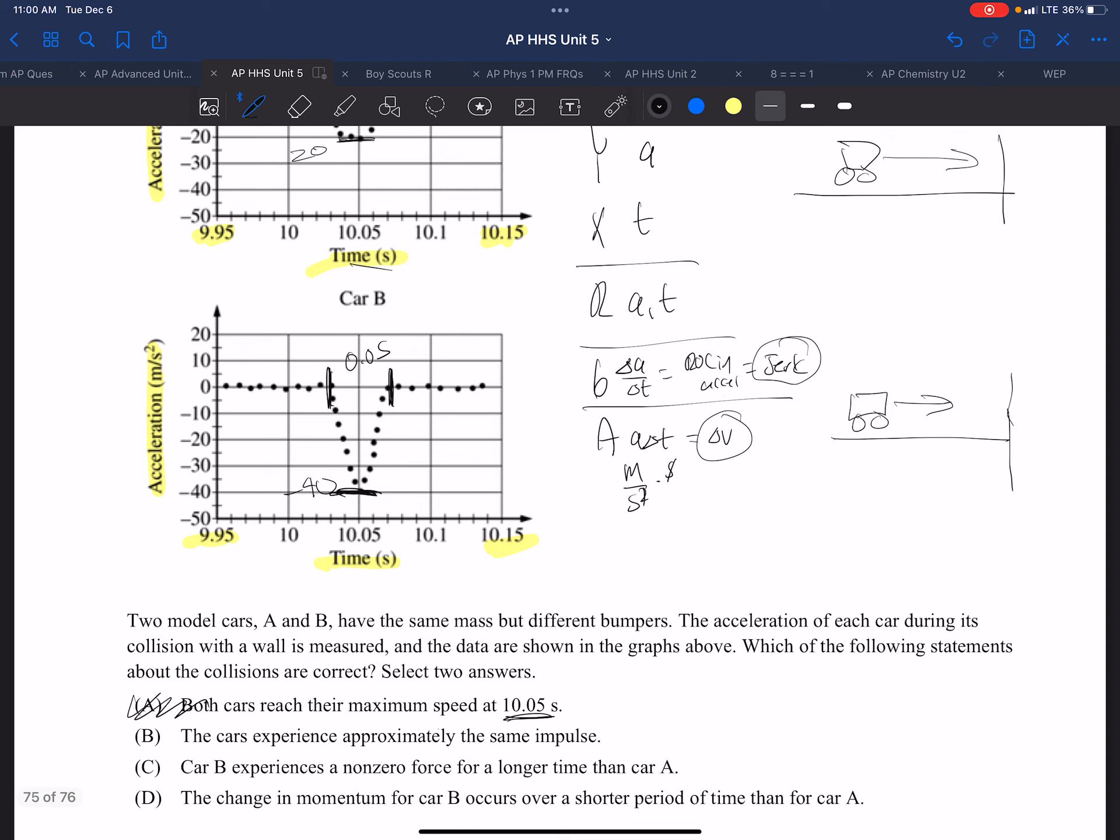The cars are experiencing the same impulse. Well, the impulse J is F bar delta t, but that is also equal to the change in momentum, m delta v.